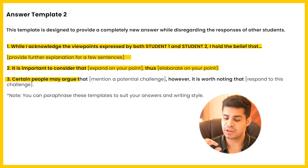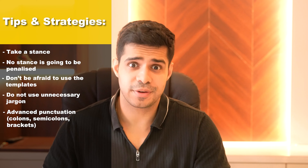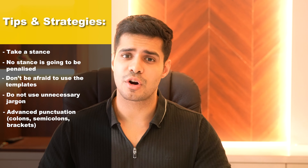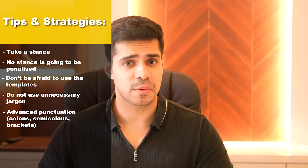The next tip is to not use unnecessary jargon. A lot of times, students don't really know the meaning of words, but they try to put them in just to show the person checking their test that they know a lot of advanced English words. Well, if one of those words were to be incorrect in a sentence, you're going to lose marks. So don't do that — use words that you know, but improve your vocabulary yourself if you'd like to use advanced vocabulary. You should also be learning advanced punctuation: how to use colons, semicolons, brackets, parentheses, and whether there should be a space after you open a bracket. You need to know these things to ensure you're writing in the best possible grammatical way.